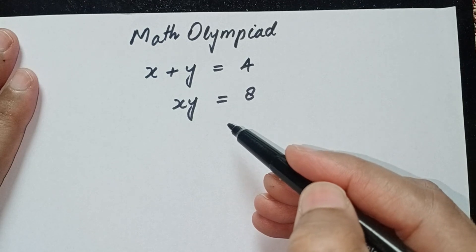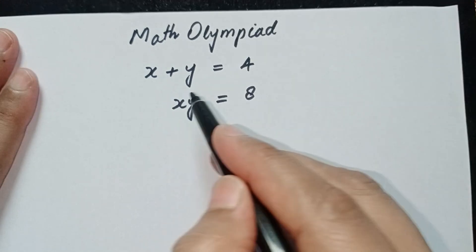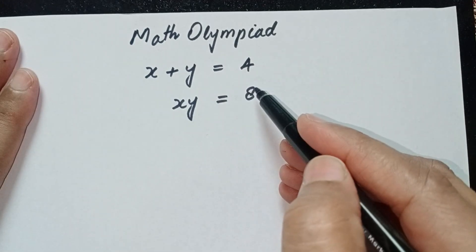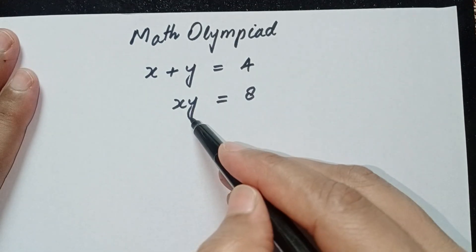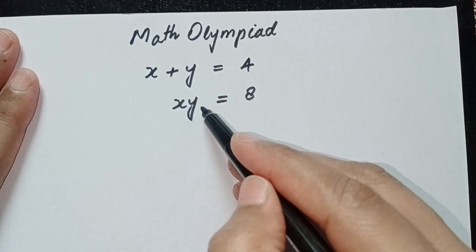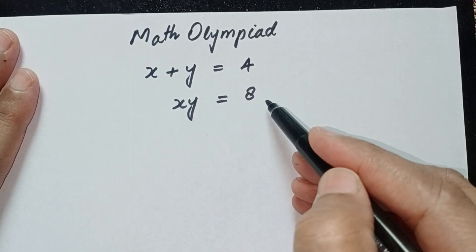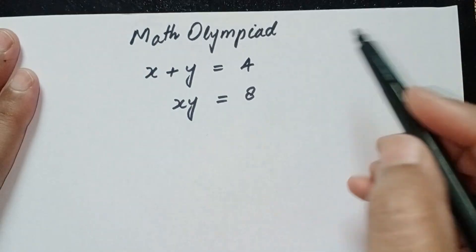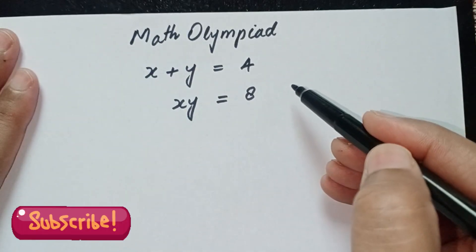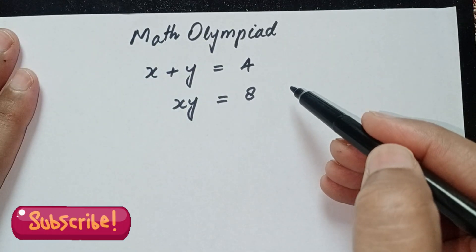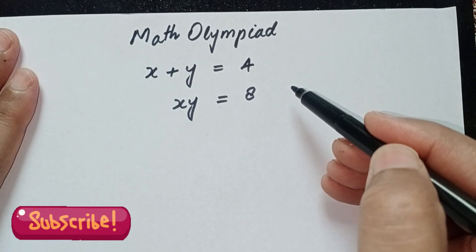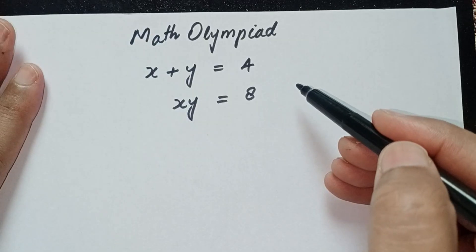Hi there, welcome back to Brain Equation. Today's question is x plus y is equal to 4, and x times y is equal to 8. We need to find out the values of x and y to solve this question.